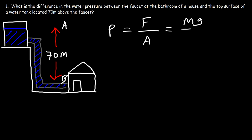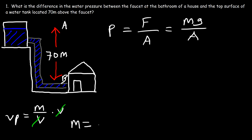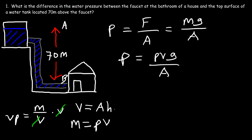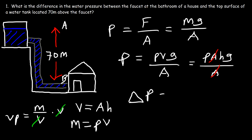The weight force is mg. And we know that density, indicated by the symbol rho, is mass over volume. So if you multiply both sides by volume, you'll see that mass is density times volume. So the pressure is going to be the density times the volume times the gravitational acceleration divided by the area. And volume can be described as area times height. So we have density times area times height times g, divided by area. So we can cancel area. So the difference in the pressure between points A and B is going to be the density of the fluid times g times the difference in the height of those two points.